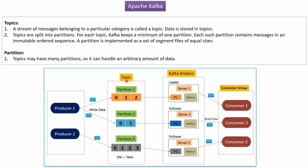Here you can see the topic. A stream of messages belonging to a particular category is called a topic, and data is stored in topics. For example, if the topic name is 'animal', then animal-related messages will be stored in the animal topic. If the topic name is 'food', then food-related messages will be stored in the food topic.